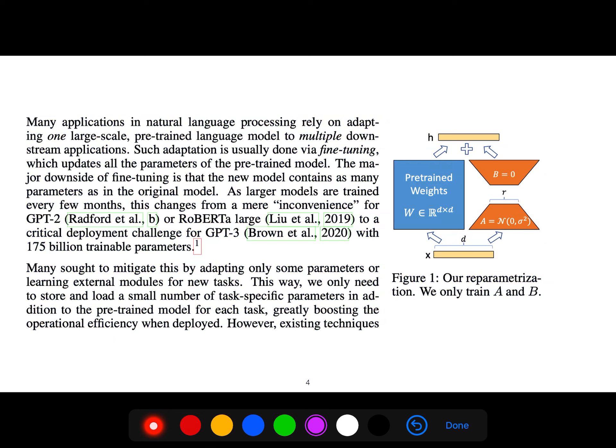So you see our reparameterization, that we only train A and B. We only train this one and this one. The blue one is frozen.